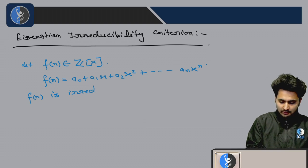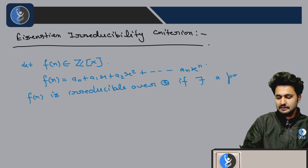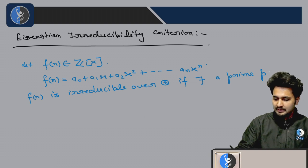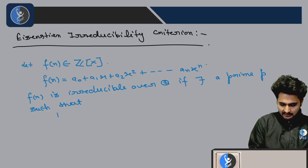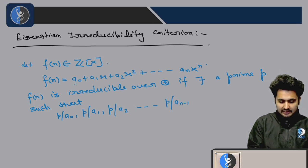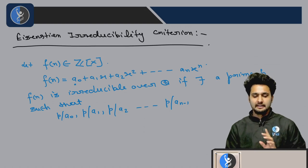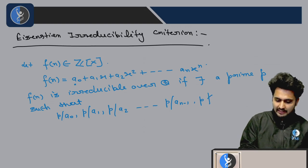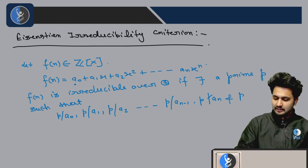If there exists a prime p such that p divides a_0, p divides a_1, p divides a_2 up to p divides a_{n-1}. So if any prime exists that divides all of these, but p not divides the highest degree coefficient which is a_n.